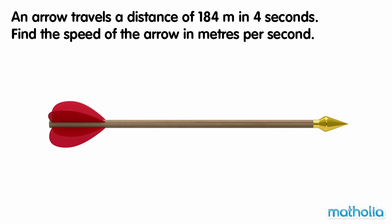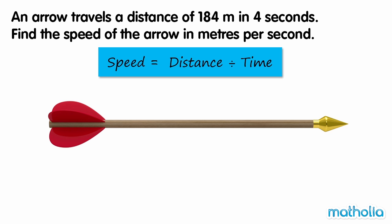An arrow travels a distance of 184 meters in 4 seconds. Find the speed of the arrow in meters per second. Recall that speed equals distance divided by time.